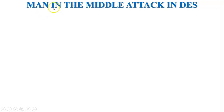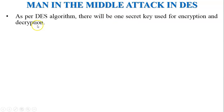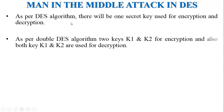Before discussing the man-in-the-middle attack in DES, we need to discuss the DES — Data Encryption Standard — algorithm. As per the DES algorithm, there is only one secret key used for both encryption and decryption, because DES is a symmetric cipher algorithm.